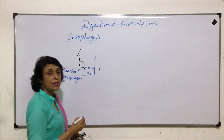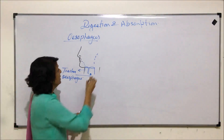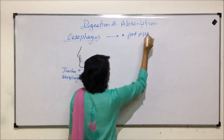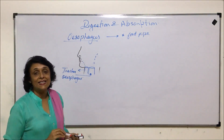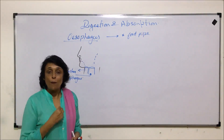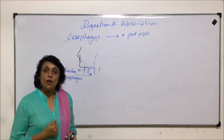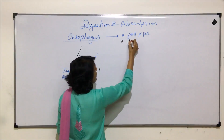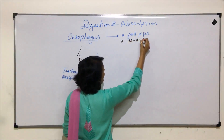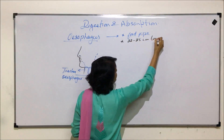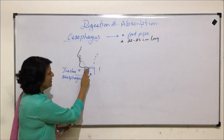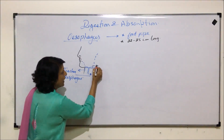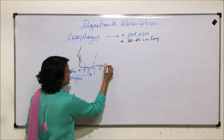The esophagus connects from the pharynx and is also known as the food pipe. It is called food pipe because it acts as the passage of food from the buccal cavity up to the stomach. It is approximately 22 to 25 centimeters long and runs from the base of the pharynx up to the stomach. This opening of the esophagus is known as the gullet.